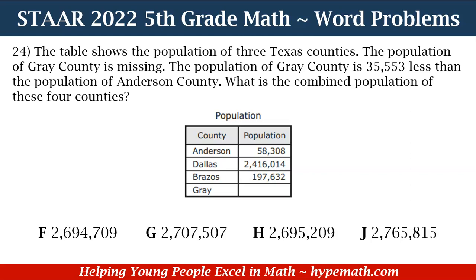Let's look at our table. We see on the left-hand side the column for counties and on the right-hand side is the population. For Anderson County, the population is 58,308. For Dallas County, it is 2,416,014. For Brazos County, it is 197,632. And of course, we don't know what Great County is yet.